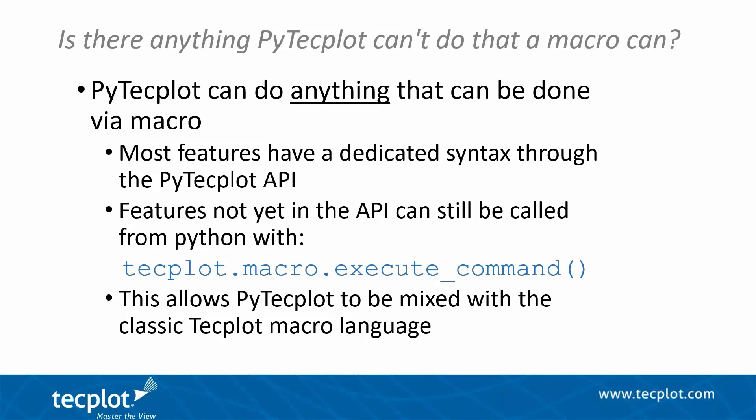One important caveat when mixing Python and macros: the Python API is zero-based, so all indices start with zero, whereas macro commands all start with one. You'll see this clearly in recorded PyTecplot scripts — when it falls back to a macro command you'll see one-based indexes, and when it uses the PyTecplot API you'll see zero-based indexes. A key area where this applies is zone and variable access. However, a really nice PyTecplot capability is accessing zones and variables by name, so in many cases you don't even have to worry about indices.